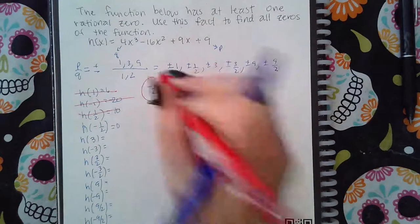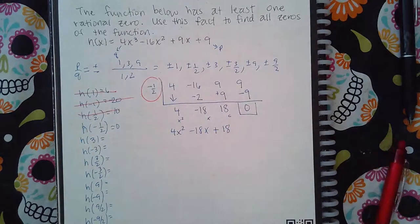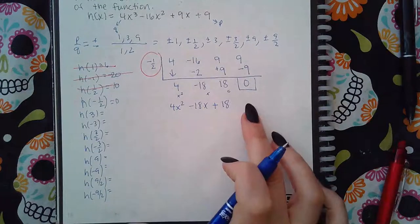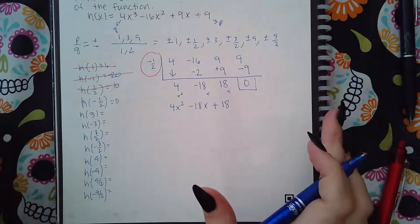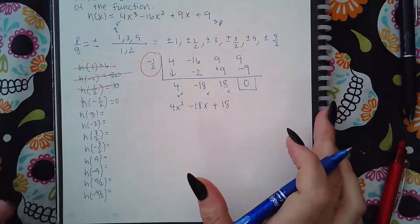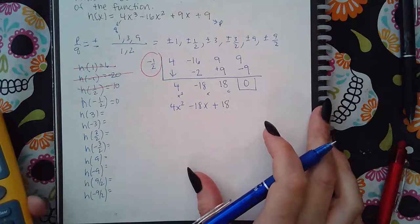So I do have one of the zeros. It's negative one half. Now I either need to factor this and set each factor equal to zero to find the other two. Or I can do the quadratic formula and find the other two. I prefer to do the quadratic formula.